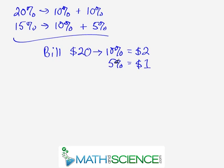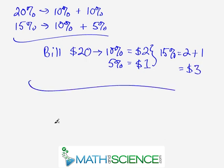So in order to find what I really want to know is 15%, then all I do is take 2 plus 1. The $2 plus the $1. So the final tip is going to be $3 for a 15% tip on $20.